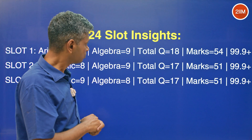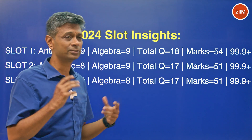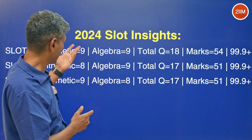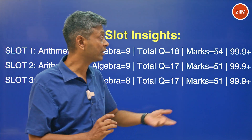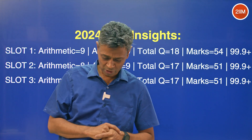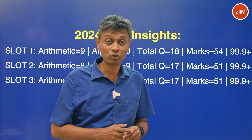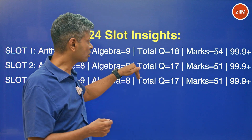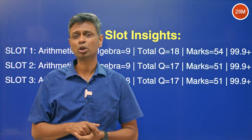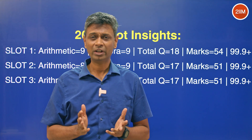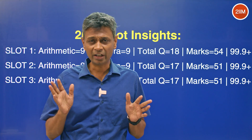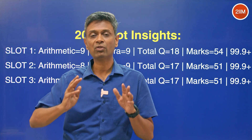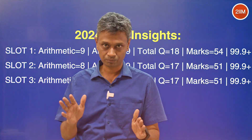What are the percentile ranges? Looking at last year, getting 17–18 questions right gives 99.9 percentile, which is very difficult. For 99.3 percentile, that's about three to four questions less — so around 12–13 questions correct — which is very much achievable if you have both arithmetic and algebra covered.